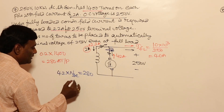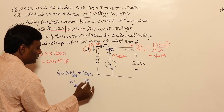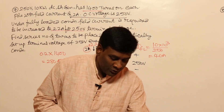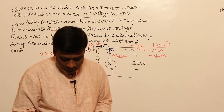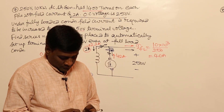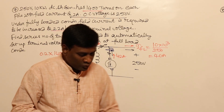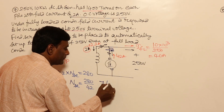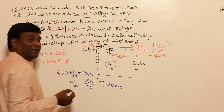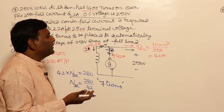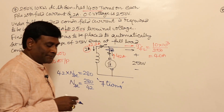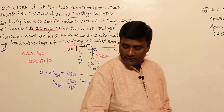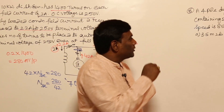Calculating N_se = 280 / 42 = 6.667, roughly 7 turns. So if we maintain 7 turns in the series field winding, it will automatically compensate such that the terminal voltage remains 250 volts even under full load conditions.